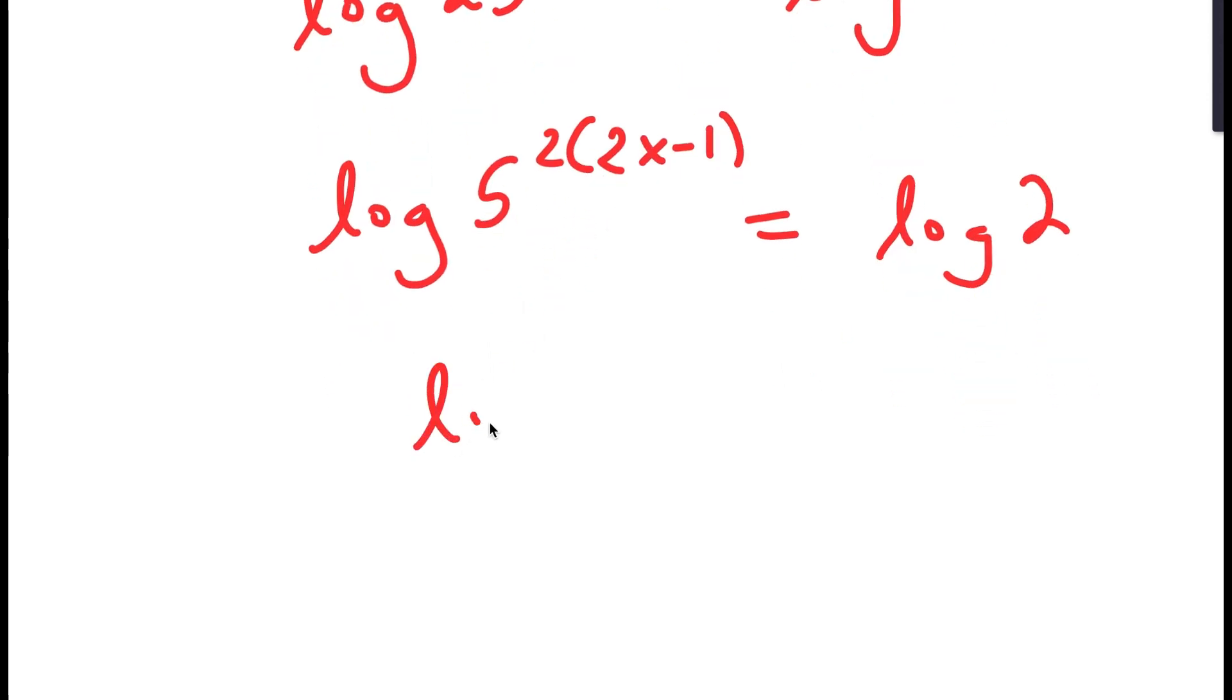And now, I'm going to distribute the 2. So I get log 5 to the power of 4x minus 2 is equal to log 2.